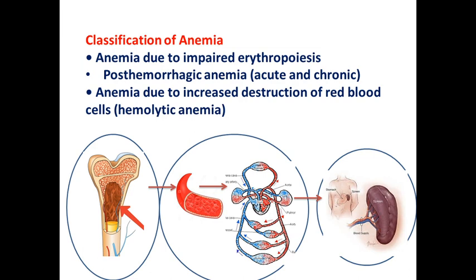Due to pathogenesis, we can divide anemia into three types. The first type is anemia due to impaired erythropoiesis, also called dyserythropoietic anemia. The second is post-hemorrhagic anemia because of acute or chronic bleeding. The third is anemia due to increased destruction of red blood cells, or hemolytic anemia.